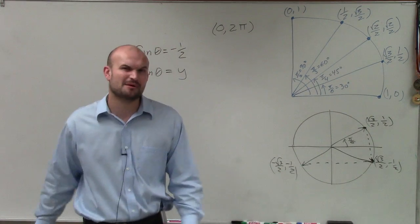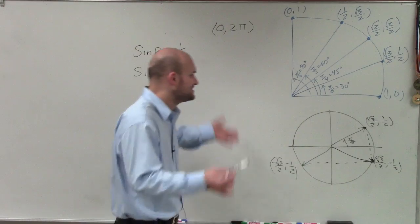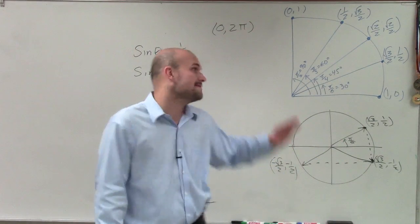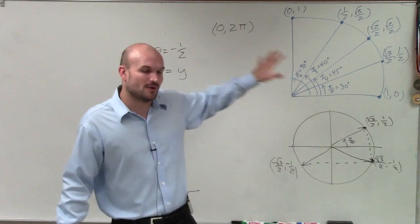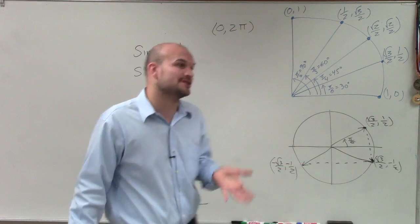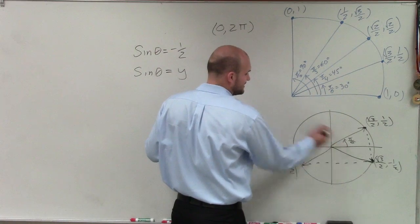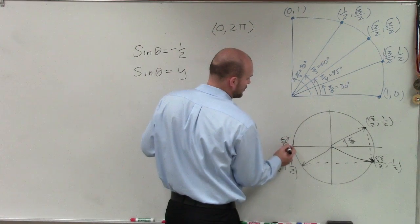Now, the fun and hard part is determining, well, what are these two angles? Because we can't use the negative angle. We can't say it's negative pi over 6. Even though that is correct, the question is saying the angle has to be between 0 and 2 pi. So therefore, well, if this is pi over 6, that means this is going to be 6 pi over 6.